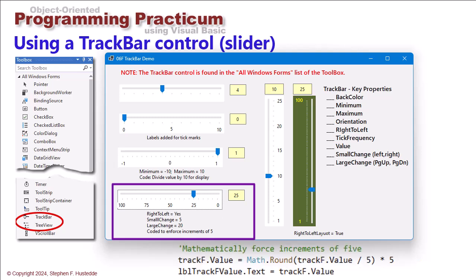Now I said the track bar doesn't have an incremental value, but once again we can do this with code. In this case we get values between zero and a hundred. I can take that and do an integer division of five to round that to a value between zero and twenty and multiply that by five, and that will give me increments of five.